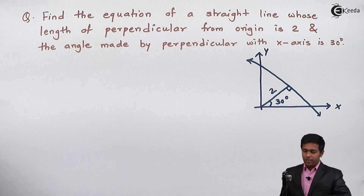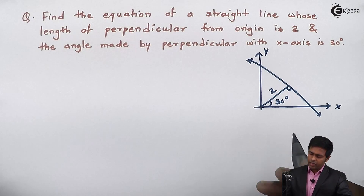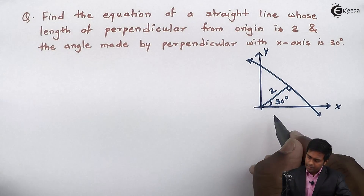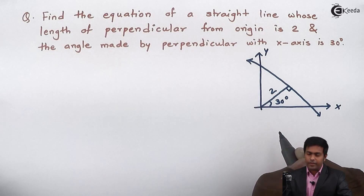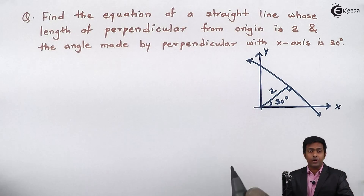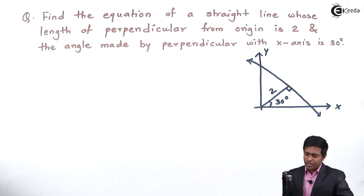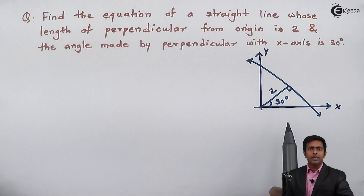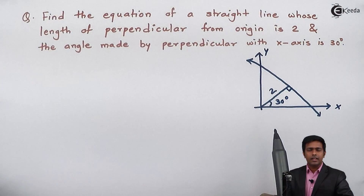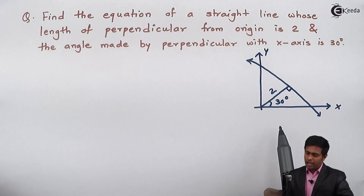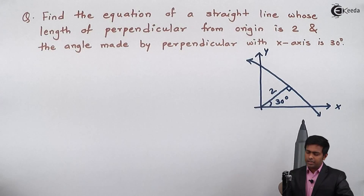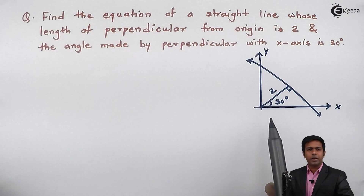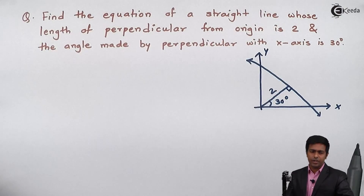If you observe, we can use the normal form to find out the equation of the line, since the length of the perpendicular and the angle made by the perpendicular are given.